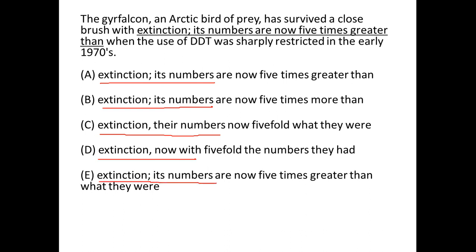We use a semicolon to join two independent clauses, and we use a comma to modify. In option C, 'their numbers' is modifying 'extension,' which is wrong. In option D, 'now with fivefold' is again modifying 'extension,' which is also wrong. In A, B, and D we are using a semicolon to join two independent clauses, which is fine.